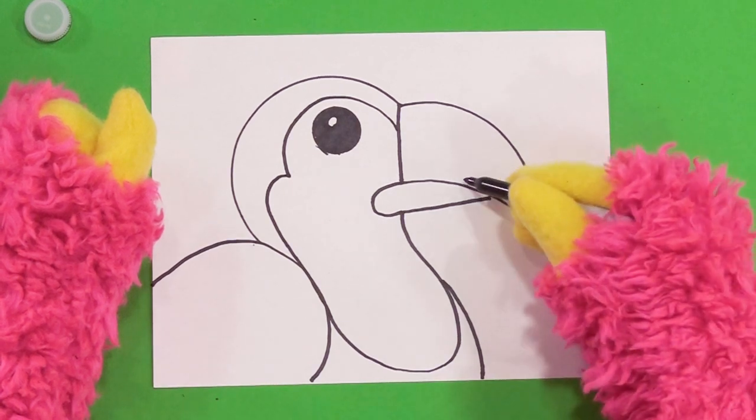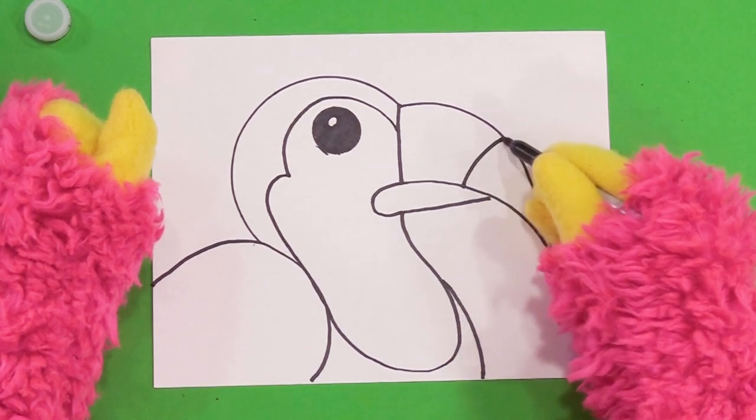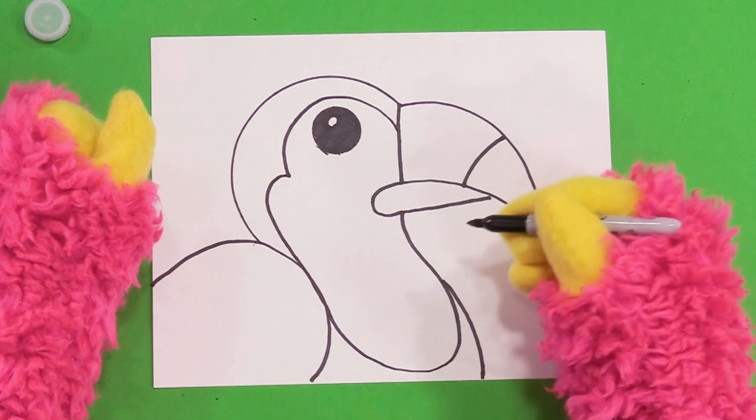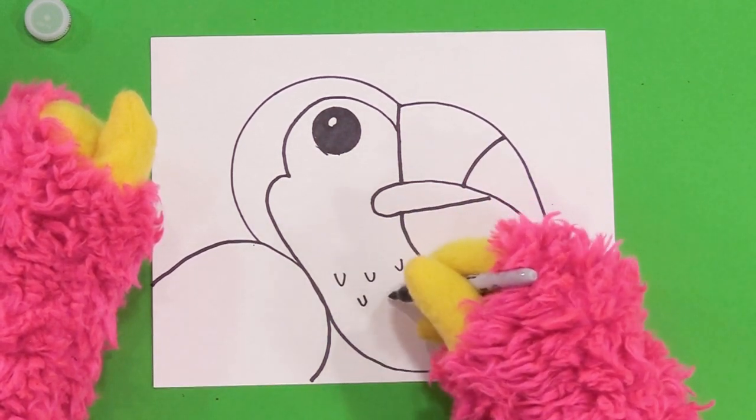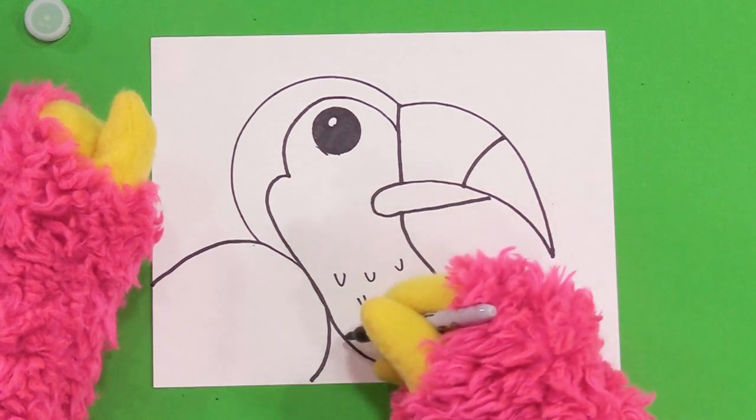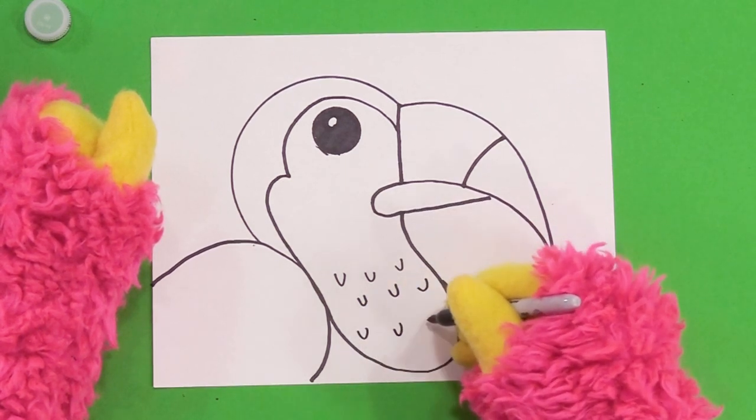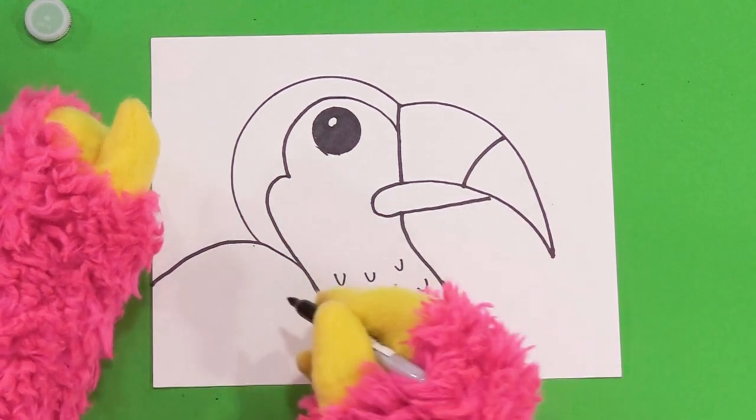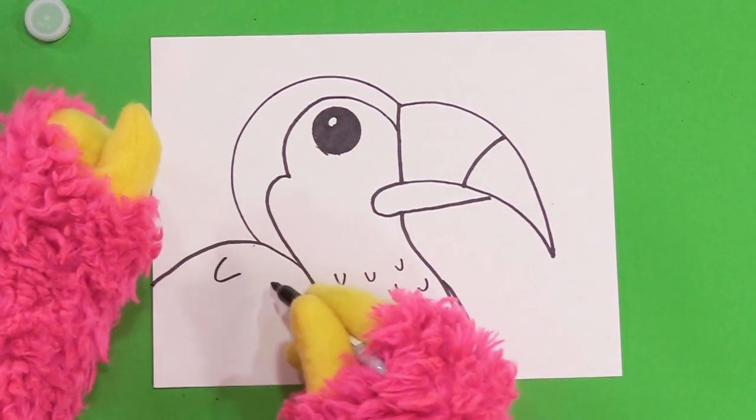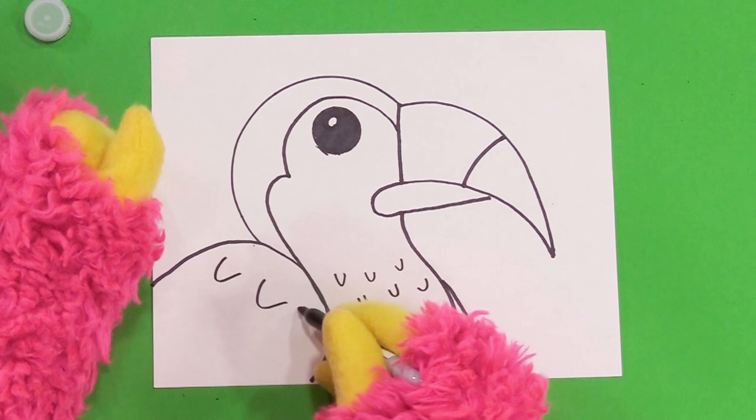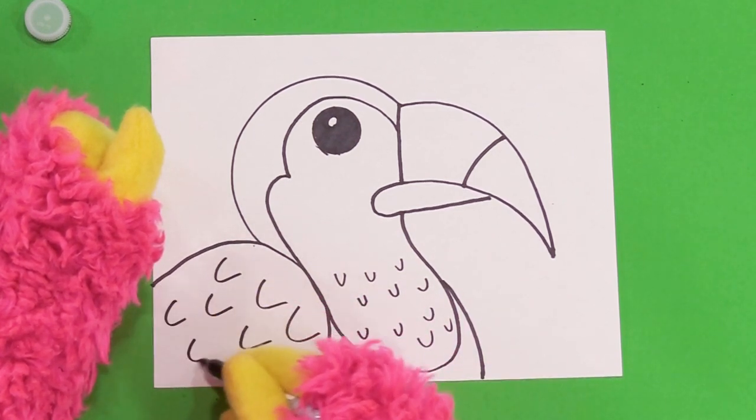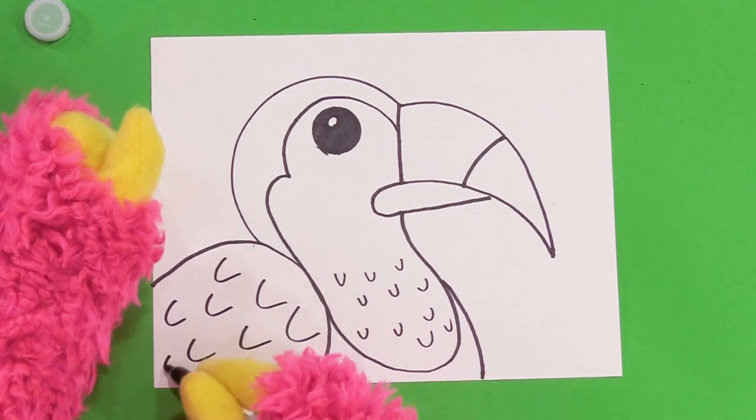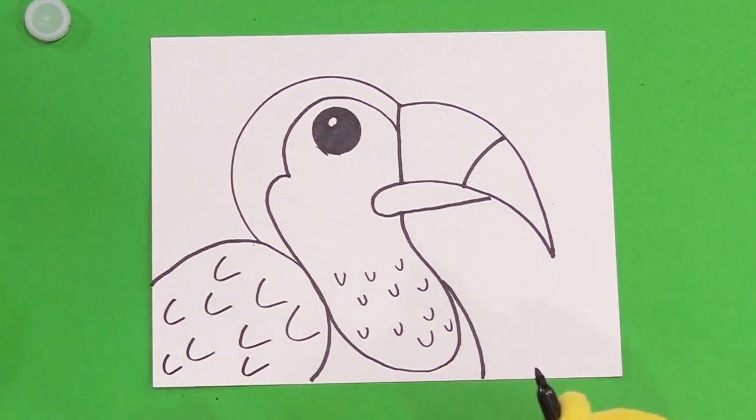And then, I'm going to do a line right here for the beak of the toucan. Then, I like to make some little feathers on the toucan, just by drawing some letter U's. And I like to do some bigger ones on this wing. And there we have our toucan.